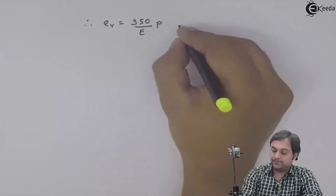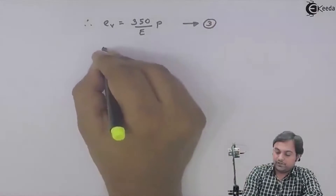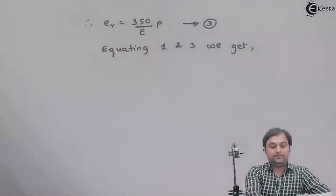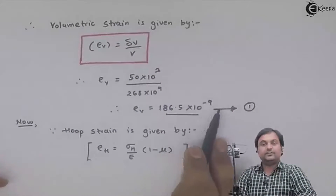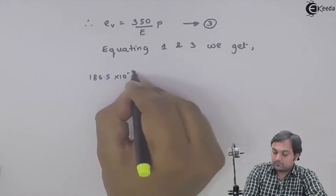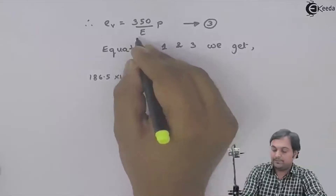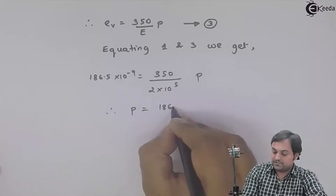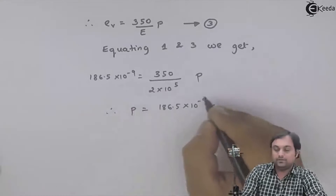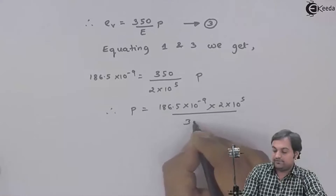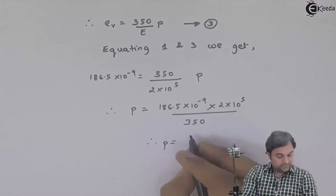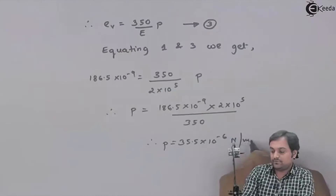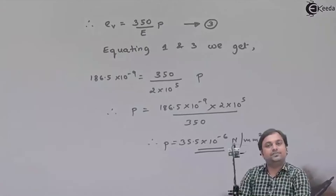Equating equation 1 and equation 3: 186.5×10⁻⁹ = 350 / (2×10⁵) × P. Therefore, P = (186.5×10⁻⁹ × 2×10⁵) / 350 = 35.5×10⁻⁶ N/mm². This is the internal fluid pressure, and with this we complete the question.